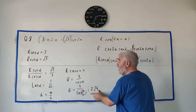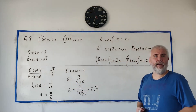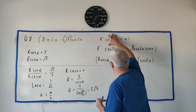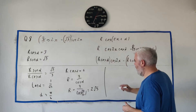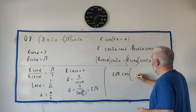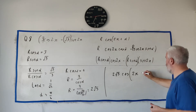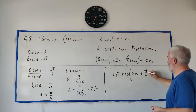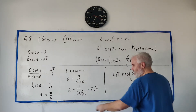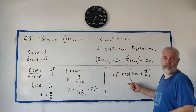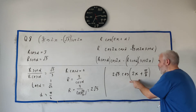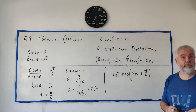Writing the full answer for part A, we have 2√3·cosine(2x + π/6). We need this for part B anyway, so let me clear this off and keep that result up top as we move on.